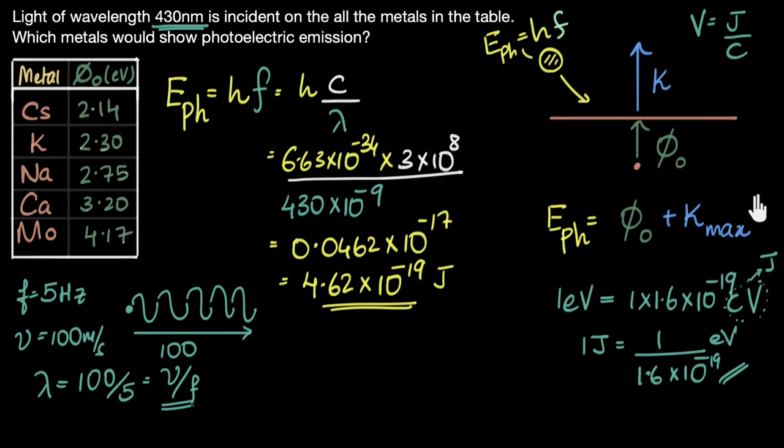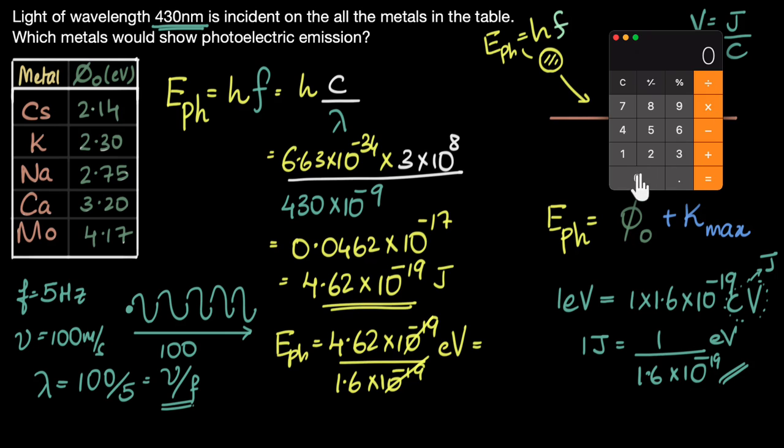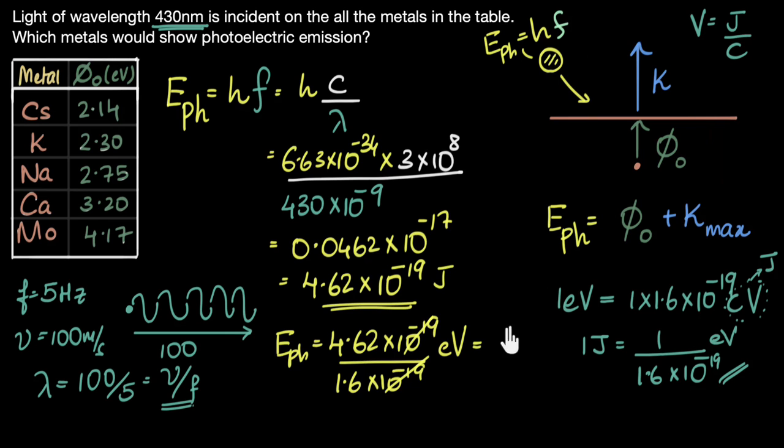So the energy of the photon in electron volt will be 4.62 times 10 to the power minus 19. And to convert joule into electron volt, I'll divide by 1.6 times 10 to the power minus 19 electron volt. So now I'll do 4.62 divided by 1.6, and that gives me 2.887. I'll round it off to 2.89. So this will be 2.89 electron volt. That's the energy of our photon.